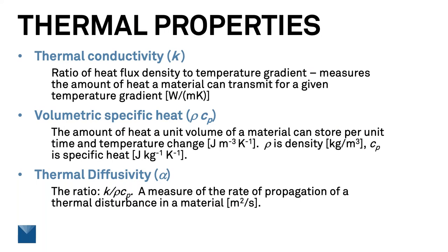We'll start with defining some of the terms that we'll use here. The thermal properties of a material have to do with its ability to transmit and store heat and the speed with which thermal disturbance can propagate through it. The thermal conductivity of a material is a measure of its ability to transmit heat — it's equal to the flux density of heat across a plane in the material divided by the temperature gradient at that plane. The volumetric specific heat describes the quantity of heat that a unit volume of the material can hold per unit temperature change, written as the product of the density and the gravimetric specific heat. The thermal diffusivity tells us how fast thermal disturbances will propagate, computed as the ratio of the conductivity to the volumetric specific heat.